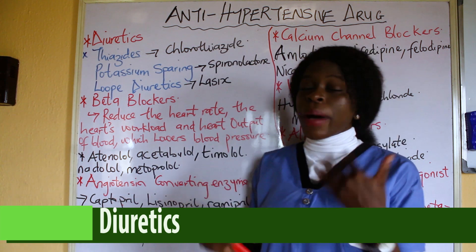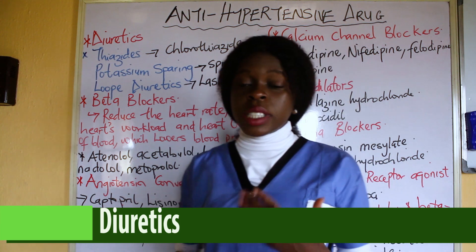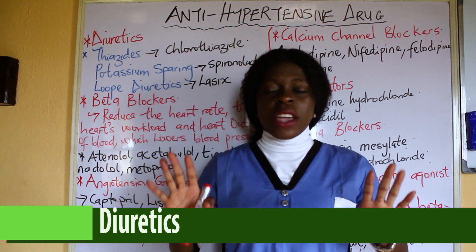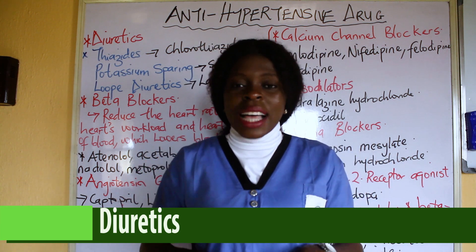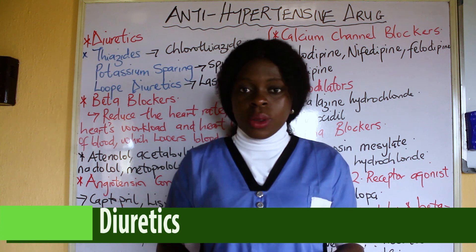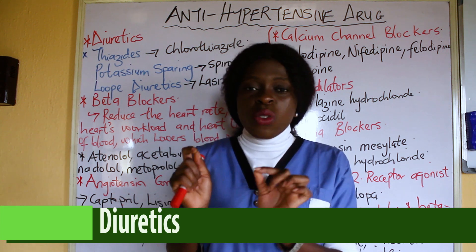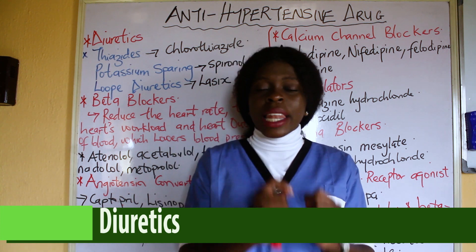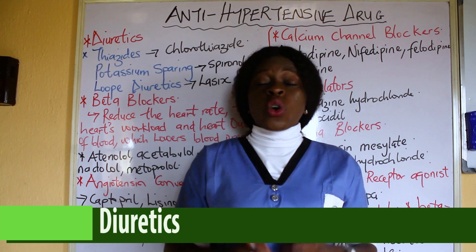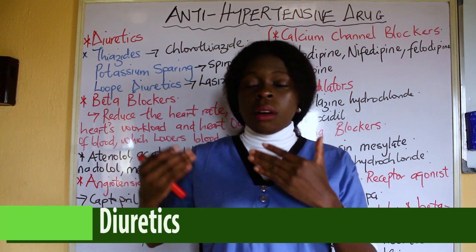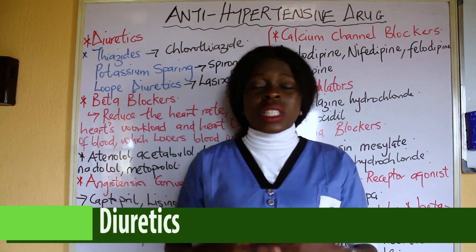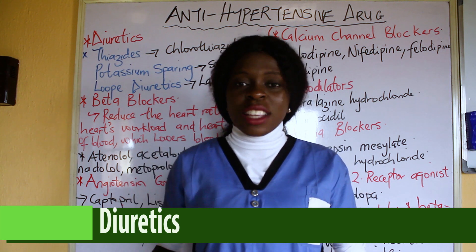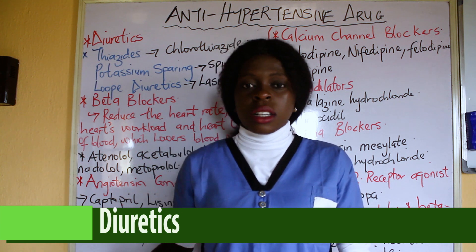There is something common about most diuretics: when taking them, they reduce your potassium level. So when taking diuretics, it is advisable to eat foods rich in potassium to help balance it.